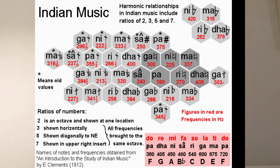In Indian music you can modulate around, but you will end up in a different place, and that is reflected in this diagram. Notes with the same name — ratios of two, or octaves apart — represent one hexagon here. As we move to the right, we multiply the frequency by three, or by three over two, or by three over four, because dividing by two or four is considered the same note.